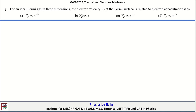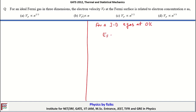Now let's continue with the next problem. For an ideal Fermi gas in three dimensions, the electron velocity V_F at the Fermi surface is related to the electron concentration n. For a 3D electron gas at zero Kelvin, the Fermi energy is given by E_F = (ℏ²/2m)(3π²n)^(2/3).